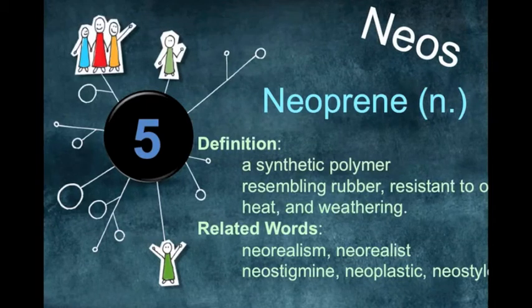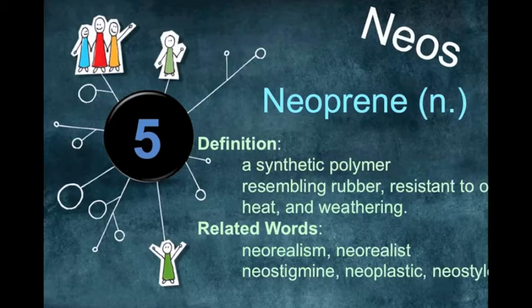Number five is neo. Related words include neoplasm and neocytography. These words are all related to the meaning of new and young. Neoplasm is a combined several substances to make a new thing. Neotherapy is another related word. Neocytography is a new medical treatment.